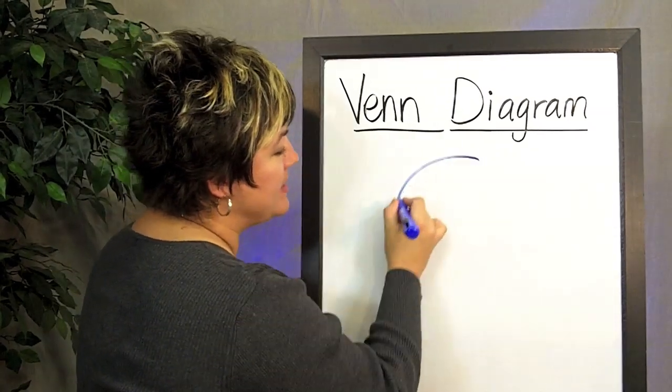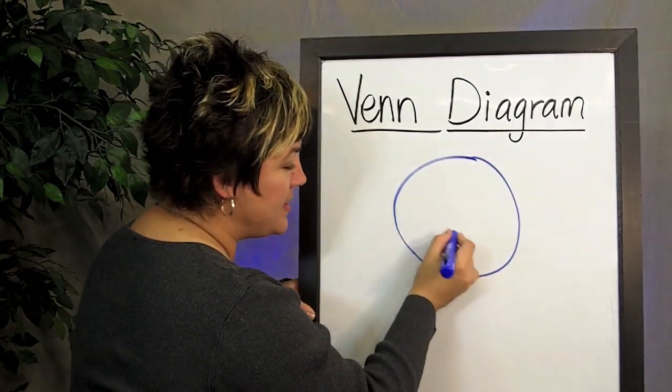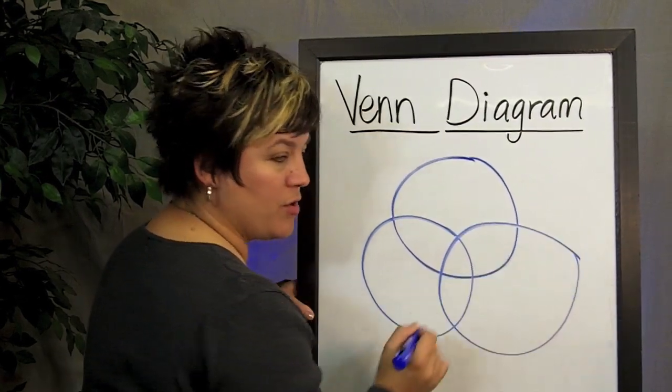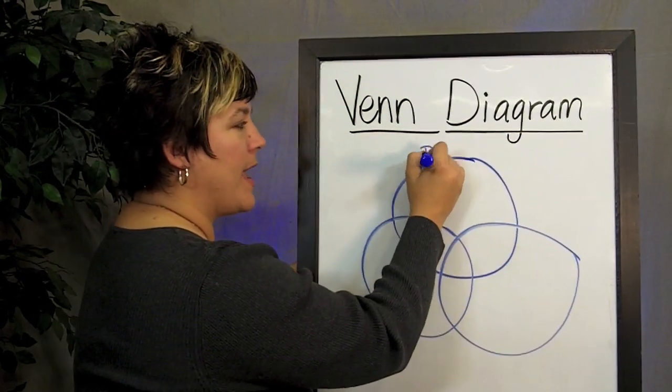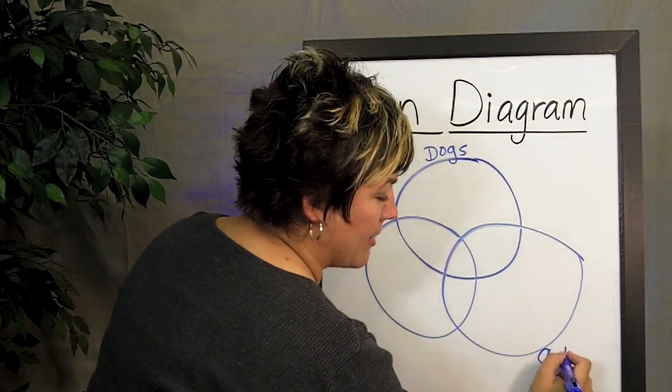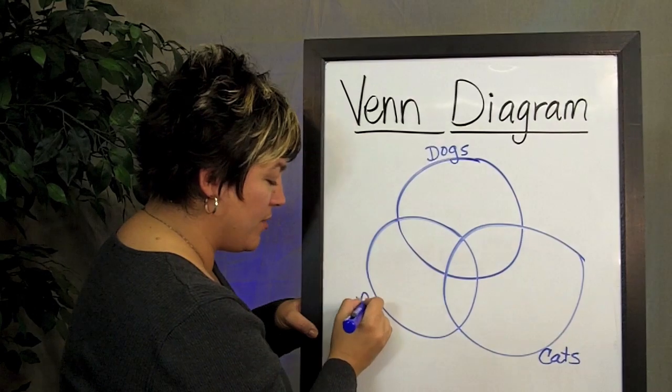We would take the same idea of the circles, but this time, we would intersect all three circles. So let's say up here again, we've got students who like dogs, and students who like cats. And let's put fish here this time,